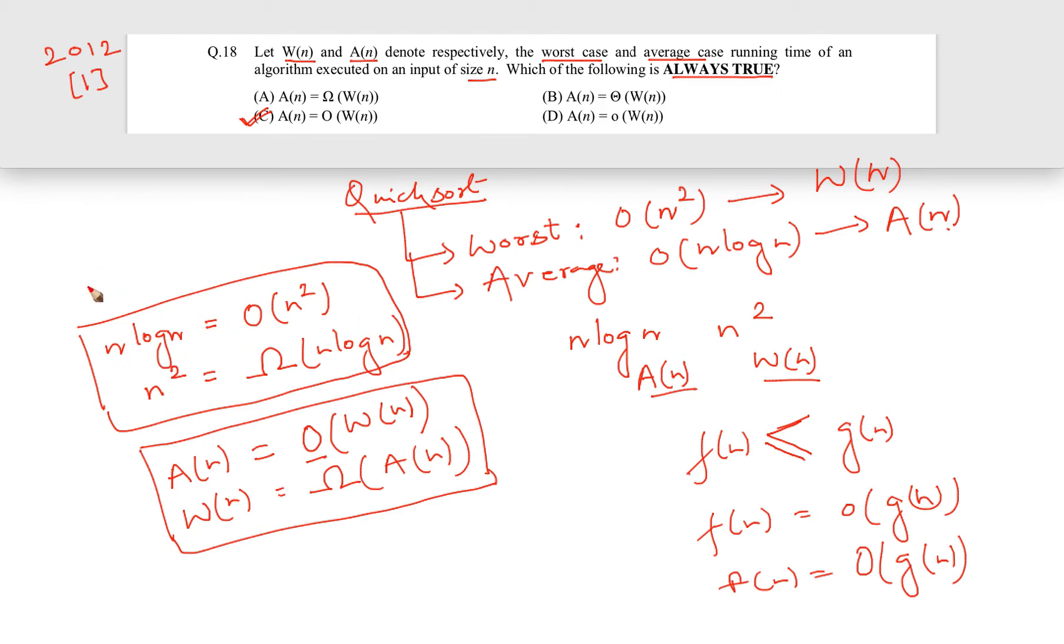Now here you can see that actually you can say n log n is equal to little-o of n square. Definitely you can say, why? Because asymptotically n square will be strictly bigger than n log n. It is true, but still this answer is wrong, D, because it is not going to be strictly bigger in all cases.